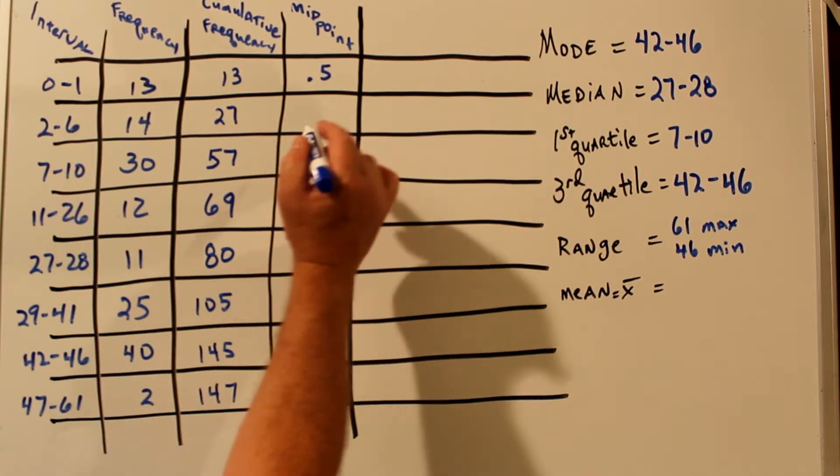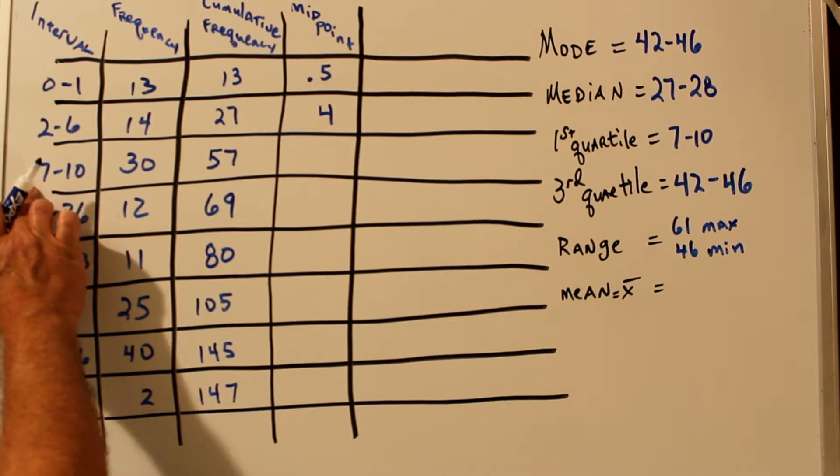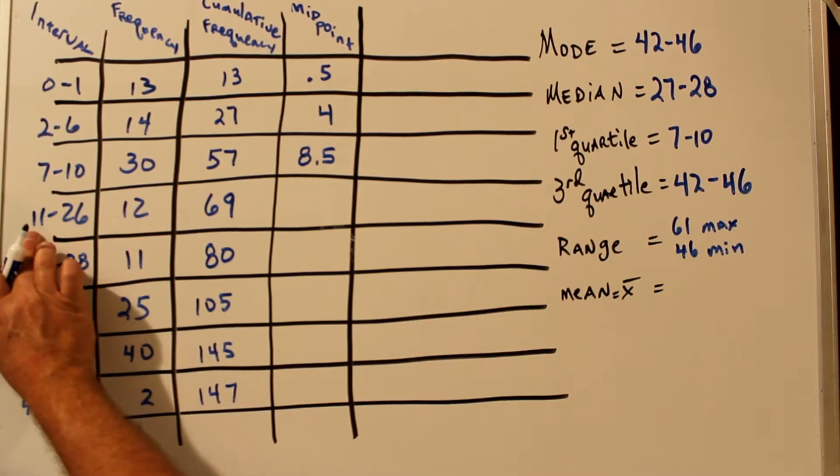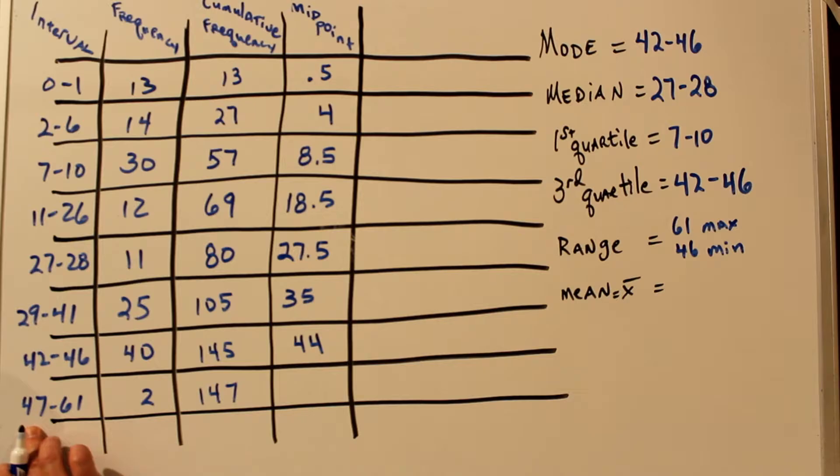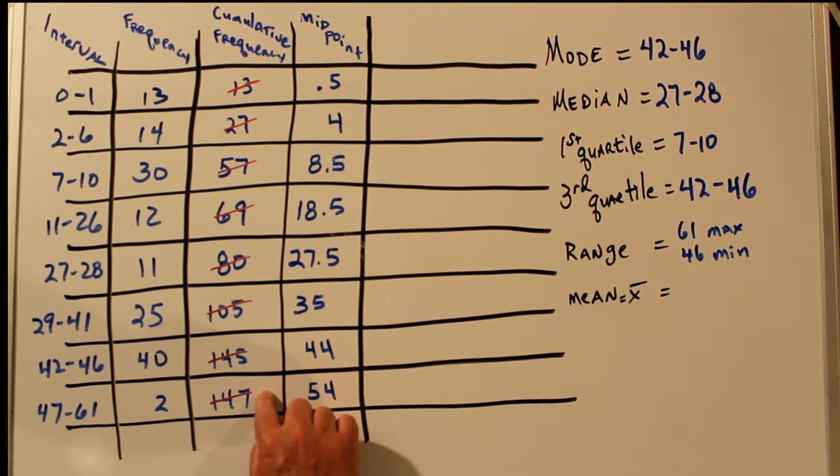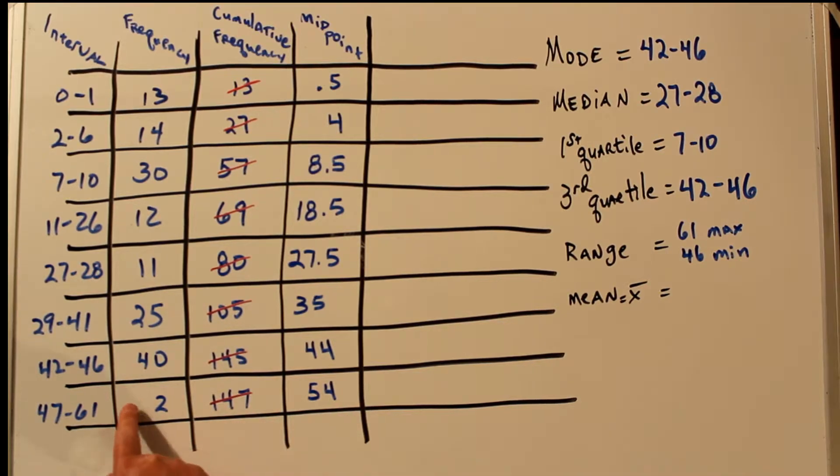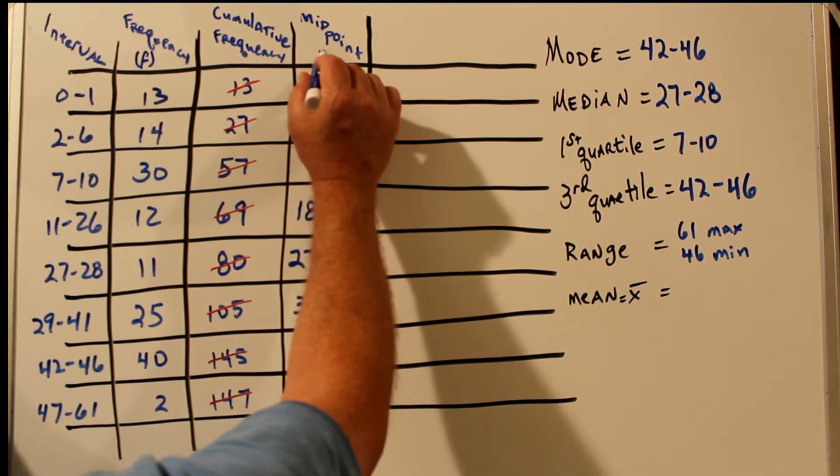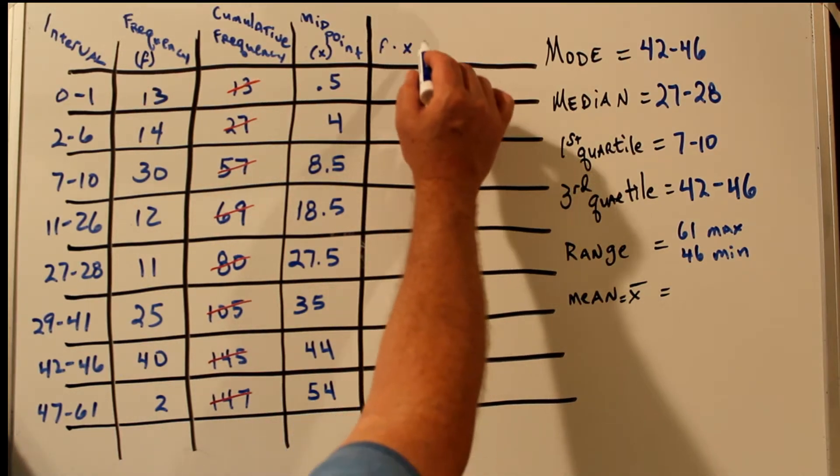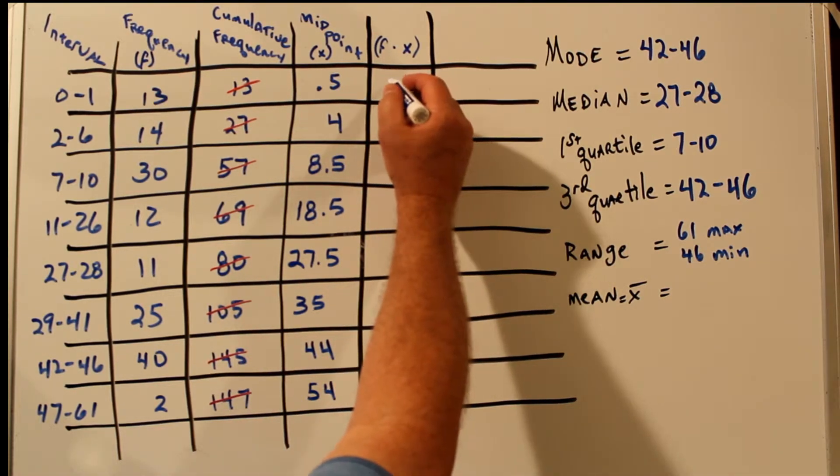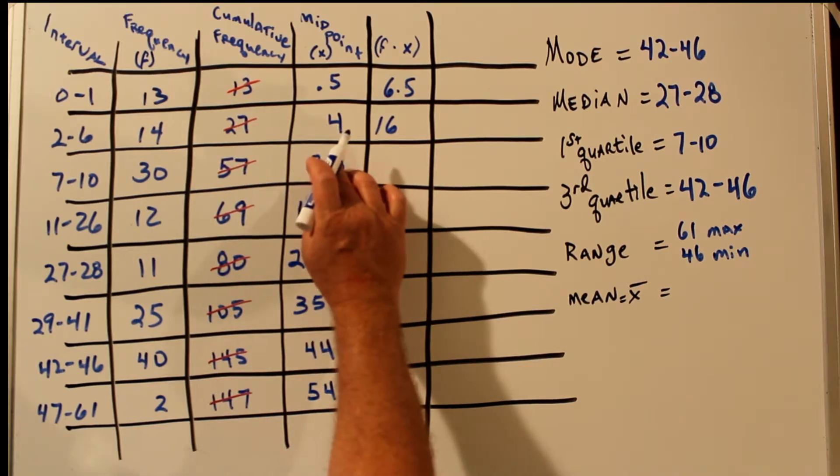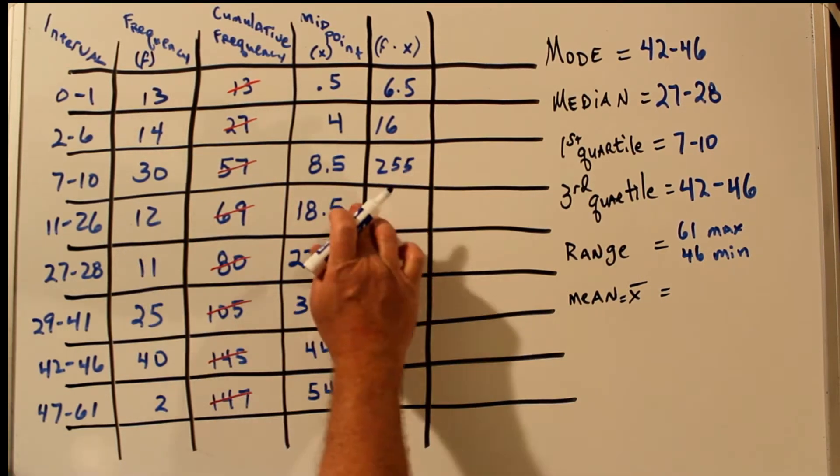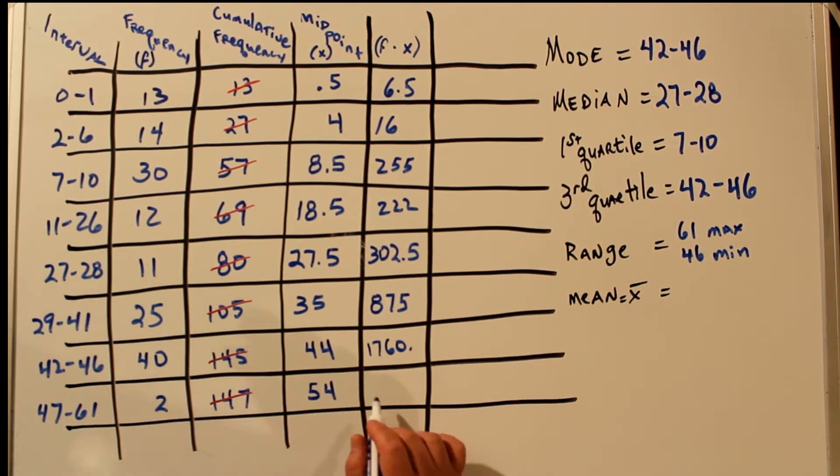Six plus two is eight divided by two is four, so the midpoint of this interval is four. Ten plus seven, 17 divided by two, 8.5. And 61 plus 47 is 108 divided by two is 54. So in order to be careful not to use the cumulative frequency in the next step, I put a line through all these numbers. We want to now multiply the frequency times the midpoint to get a value for each category. So we're going to be multiplying F times X, the value for each category. So 13 times 0.5 is 6.5. 14 times 4 is 16. 30 times 8.5...